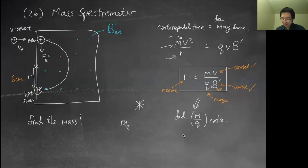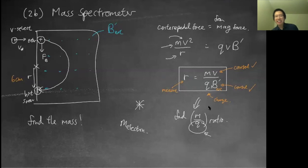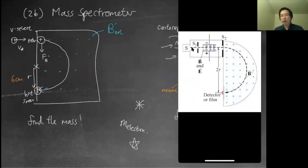Actually, the mass spectrometer finds the ratio m over q — the mass-to-charge ratio. This is how scientists actually discovered the mass of the electron: they had a separate method to measure the electron's charge, and combined with the m/q ratio from the mass spectrometer, they could determine the mass — approximately 9 times 10 to the minus 31 kilograms.